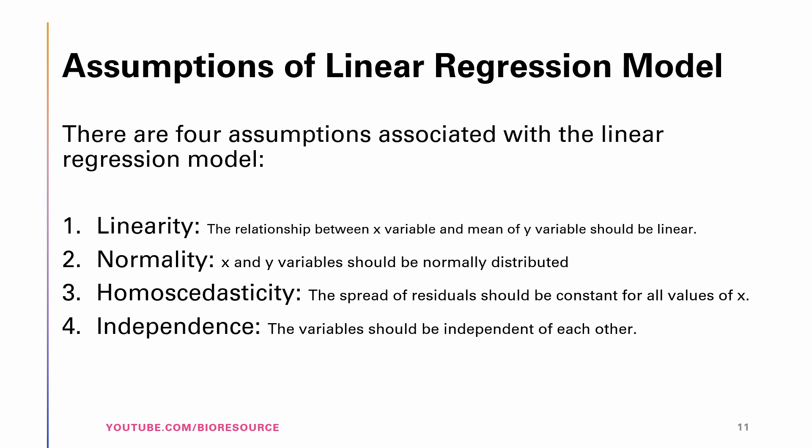Linearity can be checked by plotting a scatter plot between both variables. Normal distribution can be checked using histograms, KDE plots, and QQ plots. Homoscedasticity can be checked by plotting the residual plot, and independence can be checked using correlation metrics.